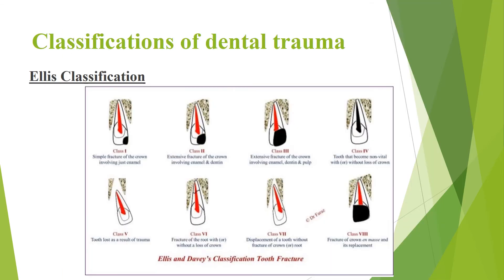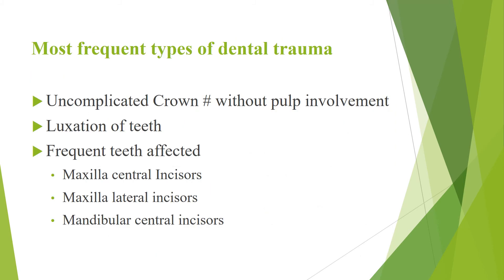According to Ellis classification, dental trauma is classified into Class 1 through Class 8. The most frequent types of dental trauma are uncomplicated crown fractures without pulp involvement and luxation of teeth. The most frequently affected teeth are the maxillary central incisors, followed by maxillary lateral incisors, then mandibular central incisors — in general, the anterior teeth of both jaws.